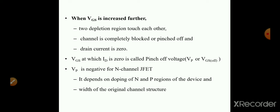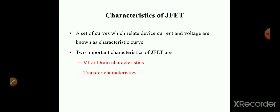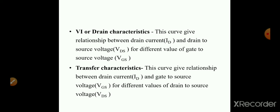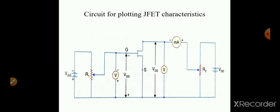Next, the characteristics of JFET are explained by two important characteristics: VI or drain characteristics, and transfer characteristics. A set of curves which give the relation between current and voltage are known as characteristic curves. The drain characteristics give the relationship between drain current and drain-to-source voltage for different values of gate-to-source voltage. The transfer characteristics give the relationship between drain current and gate-source voltage for different values of drain-to-source voltage.